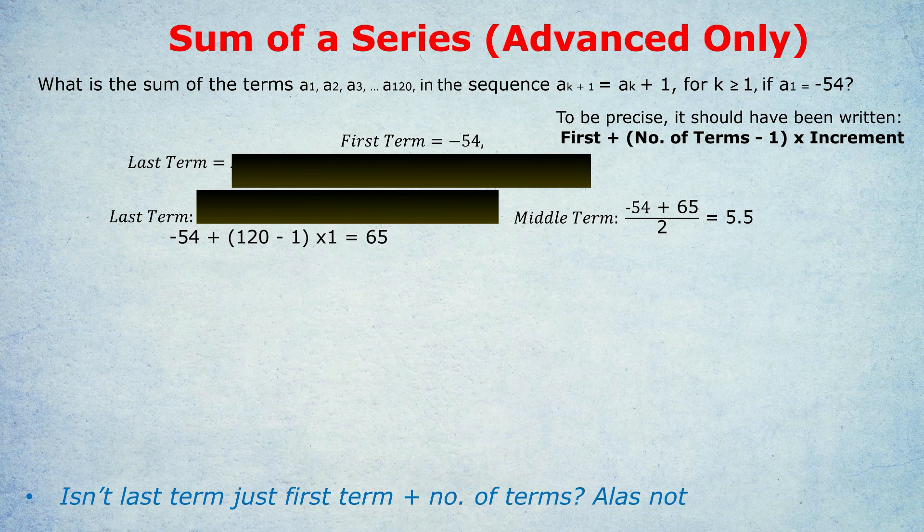The number of terms is 120, you can see that clearly. We didn't need to deduce that, because we can see it clearly, we're going from one to 120, there are 120 terms. Multiplying those, we get 660 for the total.